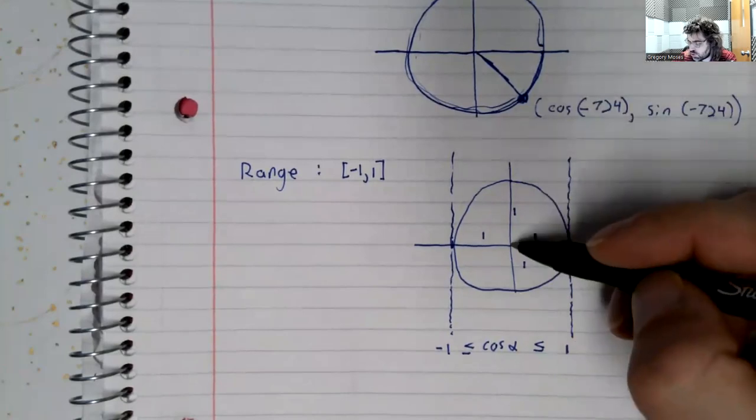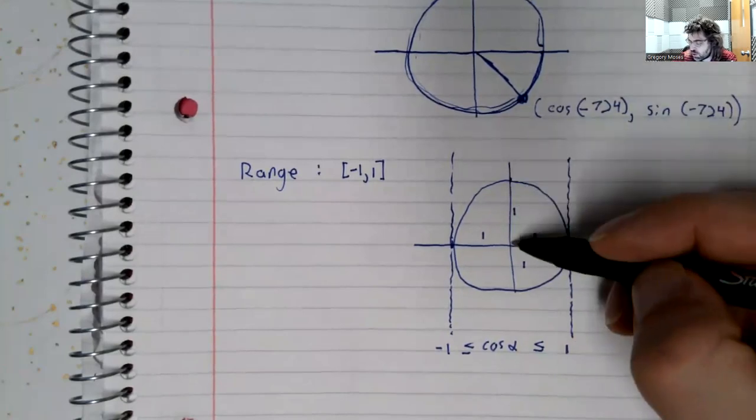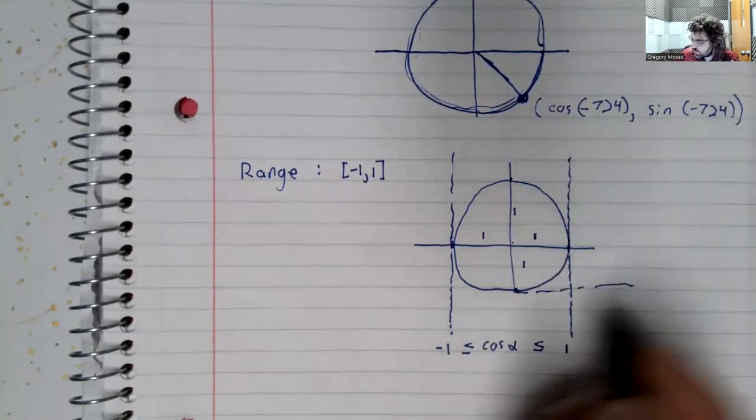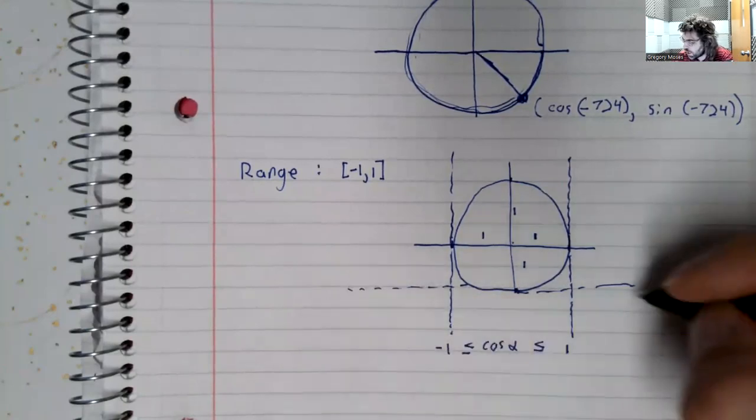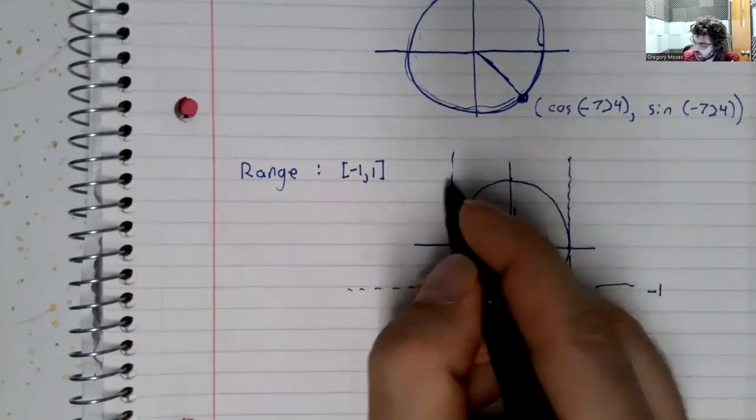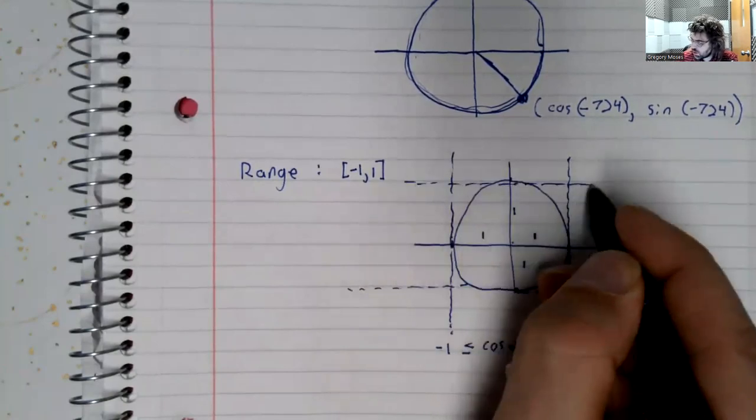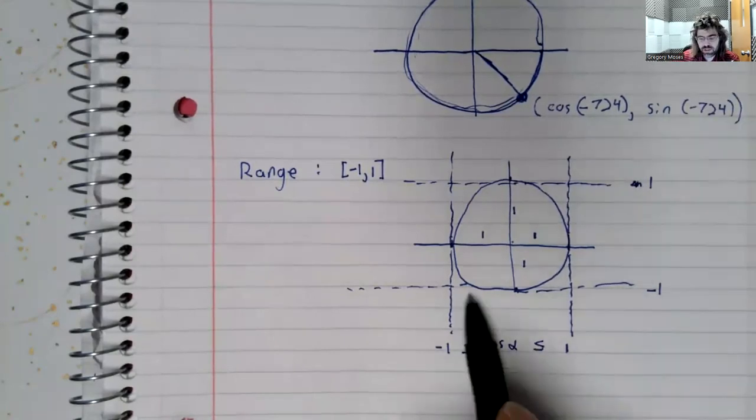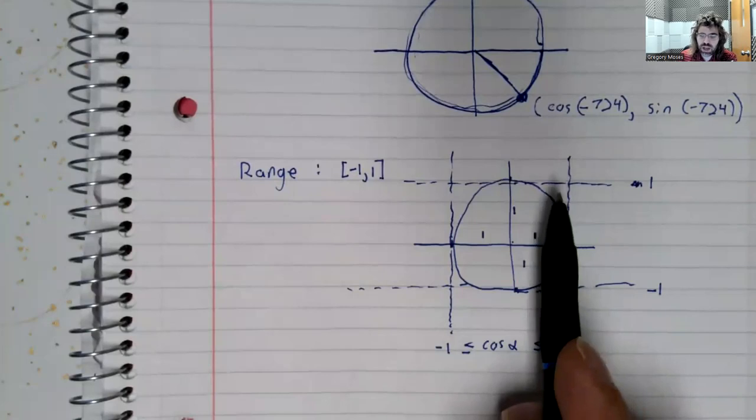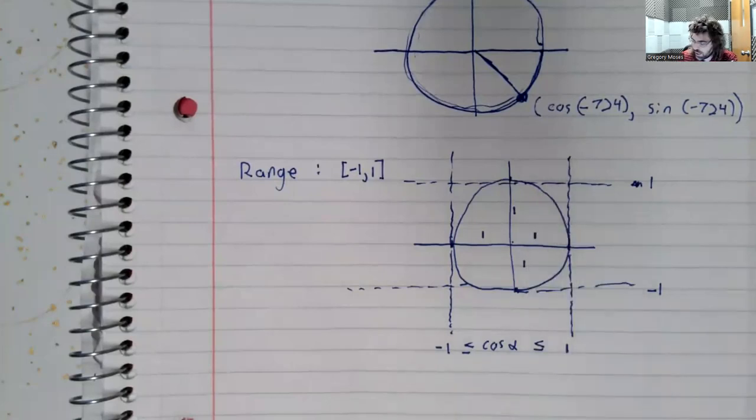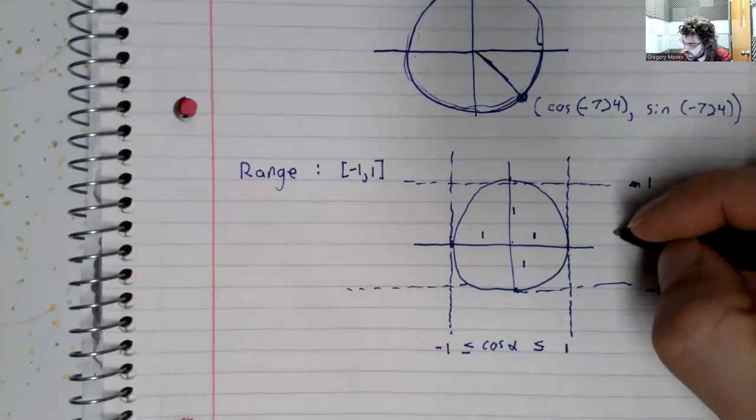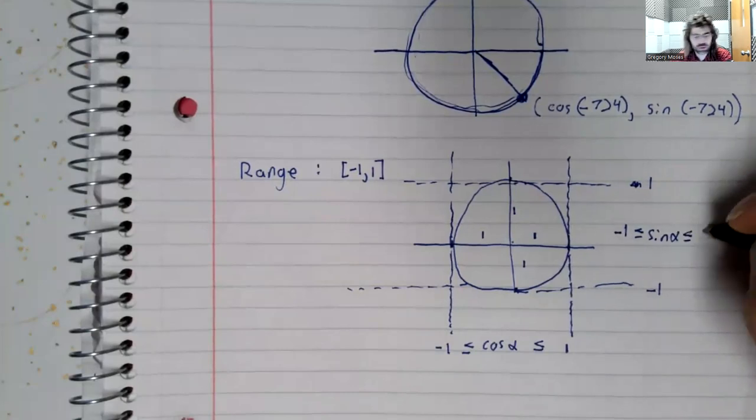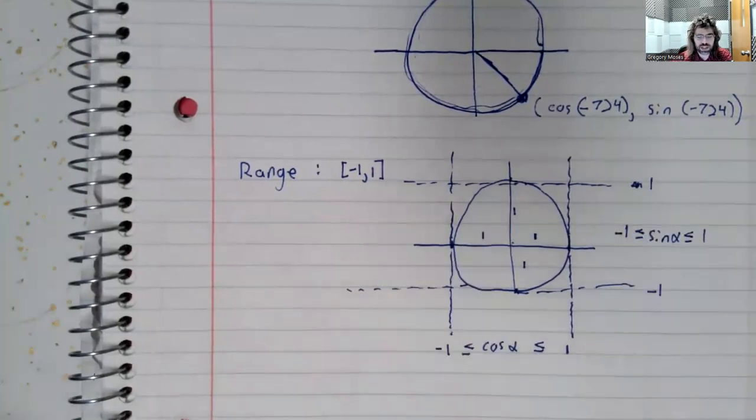And again, this is a unit circle. We go up 1. We go down 1. So the y-coordinates are cosines. So the sine is stuck between negative 1 and 1.